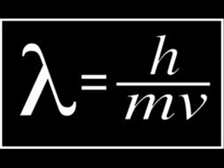This is a formula for wavelength: h divided by m times v equals wavelength.